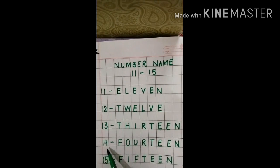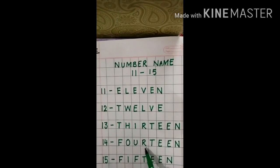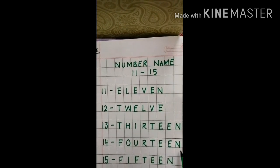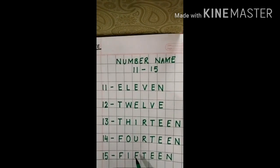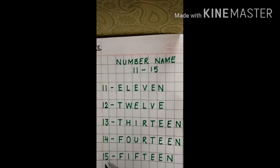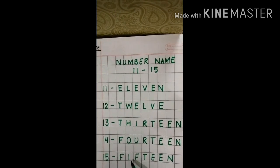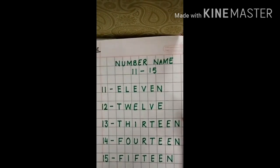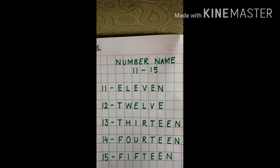Now it's number 14: F-O-U-R-T-E-E-N. 14. Once again: F-O-U-R-T-E-E-N. 14. Now we will read the last spelling. Number 15, and the spelling is F-I-F-T-E-E-N. 15. F-I-F-T-E-E-N. 15. Children, please do this work in your maths copy very neatly.